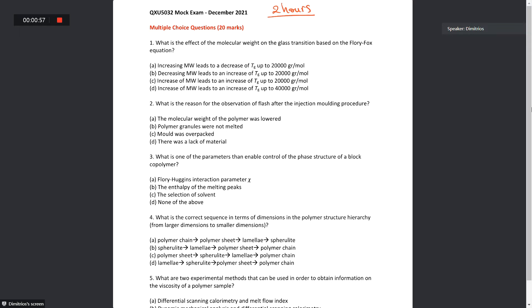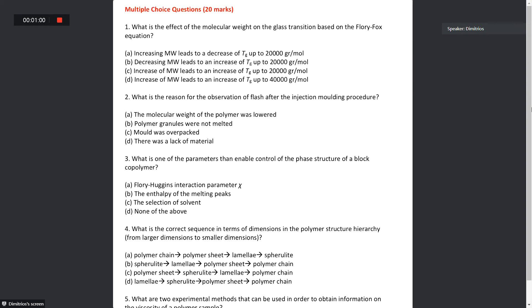Question number one: What is the effect of the molecular weight on the glass transition based on the Flory-Fox equation? You remember we have a graph based on the Flory-Fox equation where the glass transition and the molecular weight have a relationship that looks like that, and after that there is a saturation here as a plateau. The glass transition continuously increases up to 20,000 grams per mole. So the correct answer is C: increase of the molecular weight leads to an increase of the glass transition temperature up to 20,000 grams per mole.